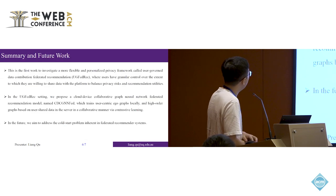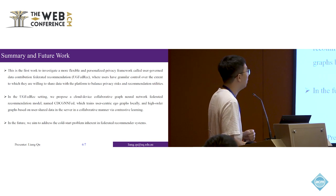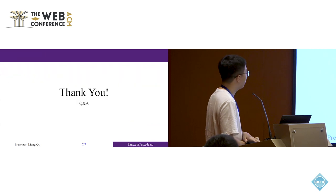In summary, in our work, we propose a novel architecture for federated recommendation, which allows users to freely control whether to upload data to the central server. Under this setting, we propose a cloud-device collaborative graph neural federated recommendation model, which trains user-centric ego-graphs locally and uses contrastive learning to improve performance. In the future, we will address some challenges in this setting, such as the cold-start problem. That's all. Thank you.